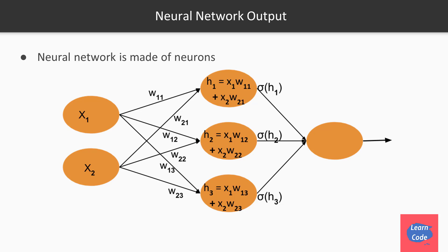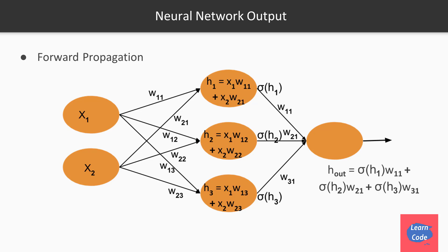Similarly, we calculate the output from the third hidden layer node. Now the output from the hidden layer acts as the input to the output layer. So the h for the output node equals the output from the first hidden layer multiplied by its weight, plus the output from the second hidden layer multiplied by its weight, plus the output from the third hidden layer multiplied by its weight. The final output from the output layer is given by applying the sigmoid function on top of it. This step of propagating the input from the input layer to the hidden layer and then to the output layer is called forward propagation.